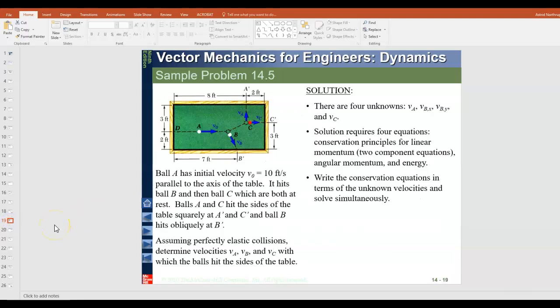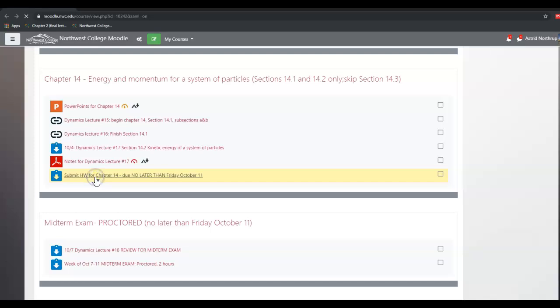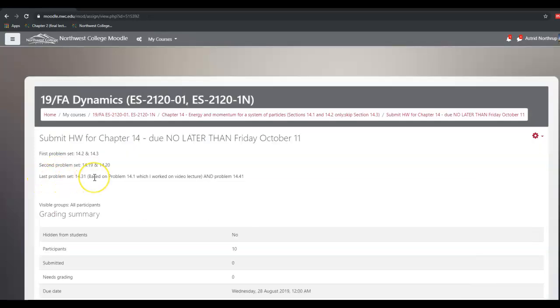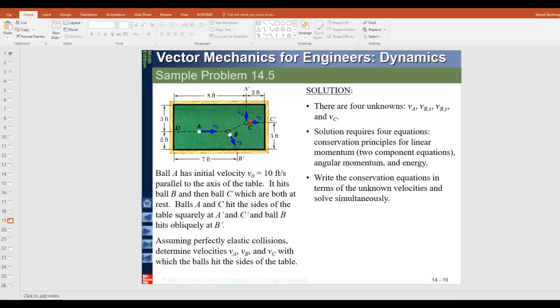All right. Now this problem, sample problem 14.5 is also in your textbook. It's very similar to the problem I have assigned for this lecture. And if you go back and you look at the homework submission, it's all complete. The last problem from this problem set is 1431 and 1441. So in other words, for this entire chapter, you only have six problems, but they are quite lengthy to do. All right. So here we have an initial, a ball that has a initial velocity. That's a, so it's a cue ball more or less, and it hits ball B and then ball C. Okay. So in other words, a deflects off of B and hit C and B and C are both at rest.